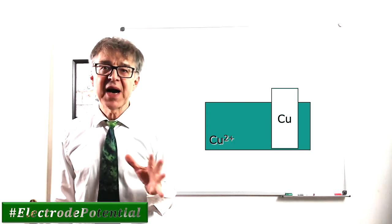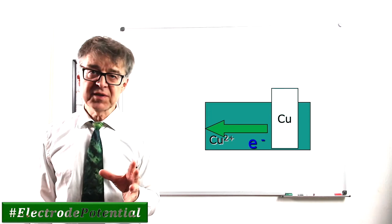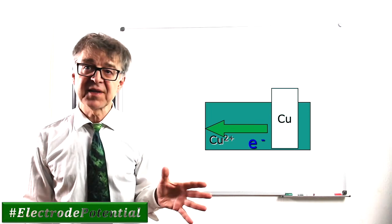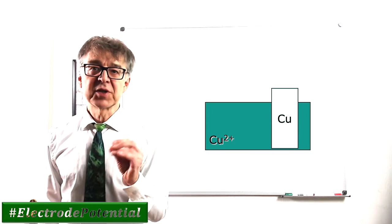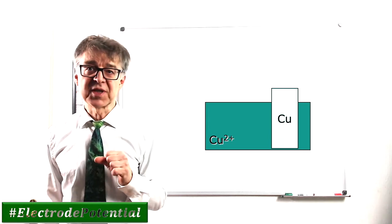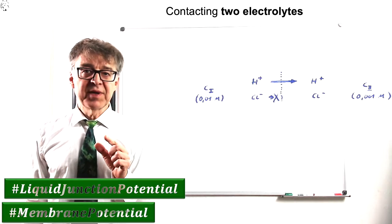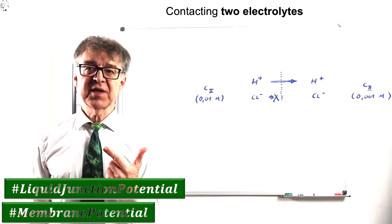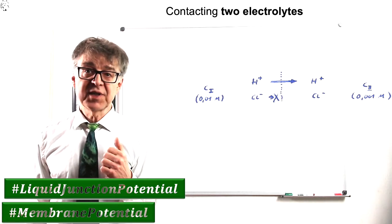As just discussed, at the boundary of an electronic conductor and an electrolytic conductor, an electrical potential occurs. The combination of two electrolytic conductors may also result in an electrical potential.